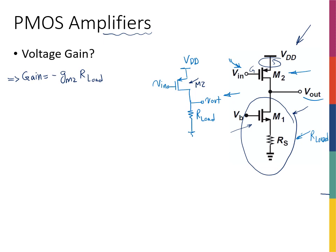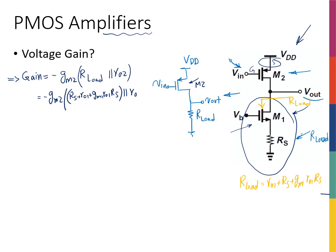To be more precise, the gain is negative GM2 times R_load in parallel with R_naught_2. Now, R_load is the resistance seen looking down from the output node, which is exactly like a common source with degeneration circuit. So R_load equals R_naught_1 plus R_S plus GM1 times R_naught_1 times R_S. Therefore, the gain is negative GM2 times the quantity (R_S + R_naught_1 + GM1·R_naught_1·R_S), all in parallel with R_naught_2.